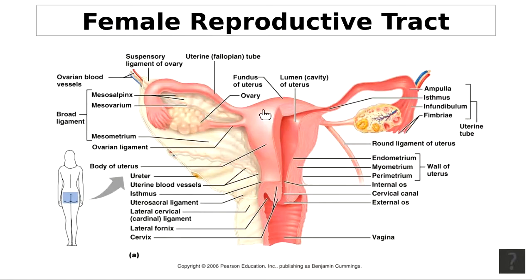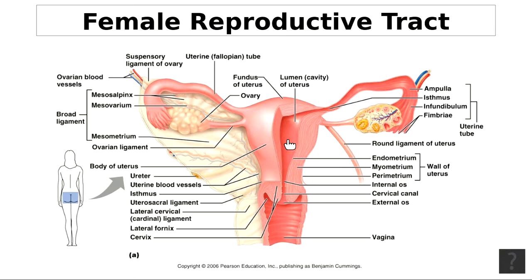The uterus is this pear-shaped structure, also called the womb. It is the site of implantation and development of a fetus — the egg deposits itself into the wall and the fetus develops inside the uterine cavity. There are three basic layers of the uterus wall.